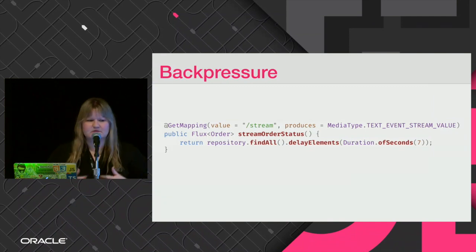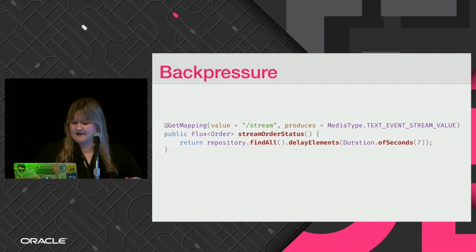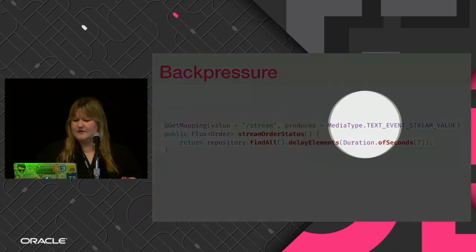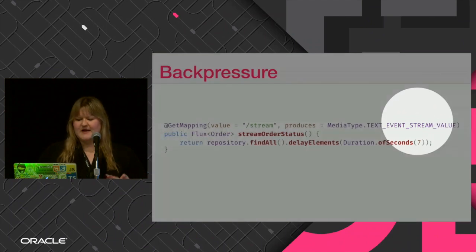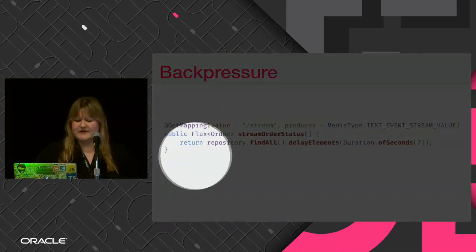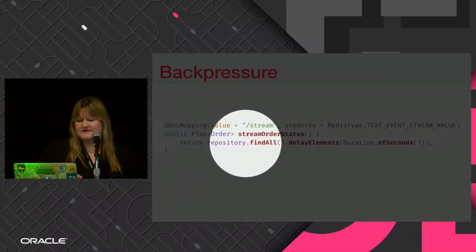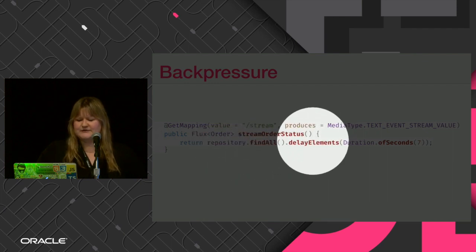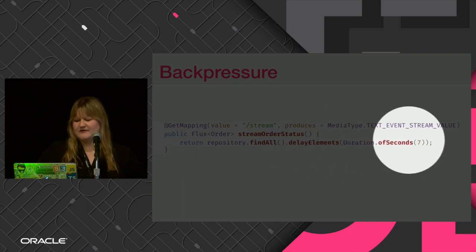So how do we handle back pressure in our application? As you can see, we're going to send a new media type — instead of sending JSON, we're going to send a stream of values, and Spring will prepare all the formatting automatically. We're still using a Flux of orders, and this is just to emulate each event happening on the order status stream.